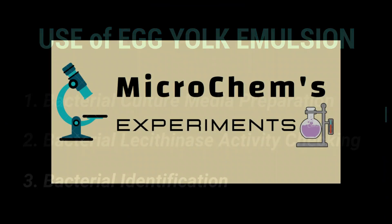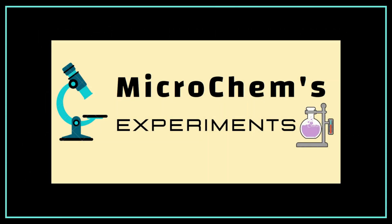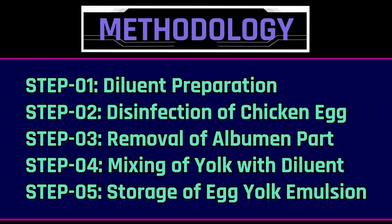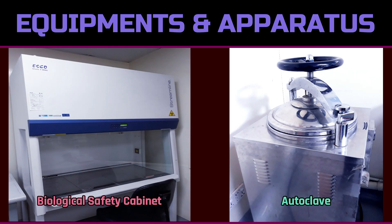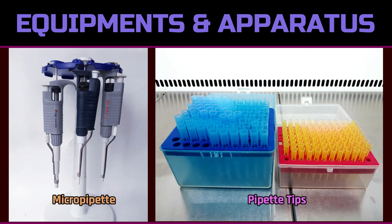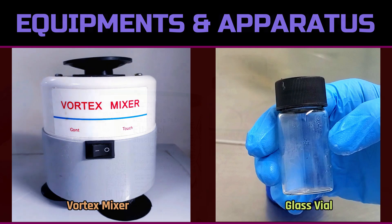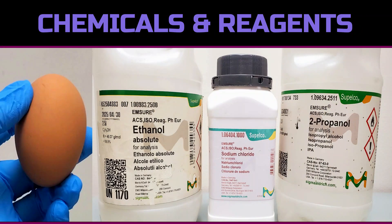In this video, we are going to show you the detailed procedure for the preparation of egg yolk emulsion. Welcome to Microchem's Experiments — be with us, be a laboratory expert. The method involves five steps: diluent preparation, disinfection of chicken egg outer surface, removal of albumin part, mixing of yolk with diluent, and storage of egg yolk emulsion. Throughout the procedure we need a biological safety cabinet, autoclave, micropipette, tips, vortex mixer, glass vial, chicken egg, absolute ethanol, sodium chloride, and isopropanol.